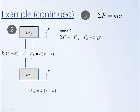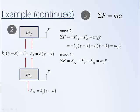We substitute in the expressions for the two forces from the free body diagram to get the governing equation of motion for M2. Applying the same process to M1: there are three forces — FS2, FD, and FS1. FS2 and FD are both upward (positive), while FS1 is negative. The mass is M1 and its acceleration is X double dot. We substitute in expressions for FS2, FD, and FS1 to get the governing equation for M1.